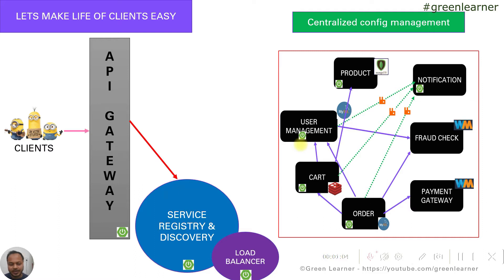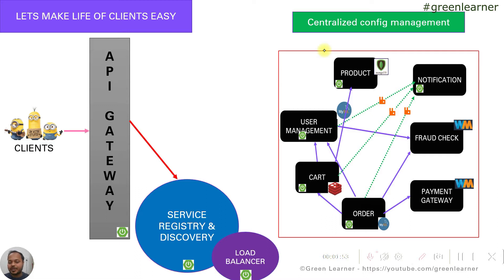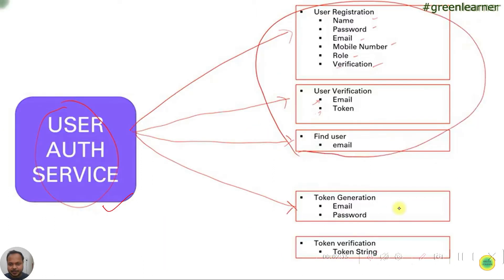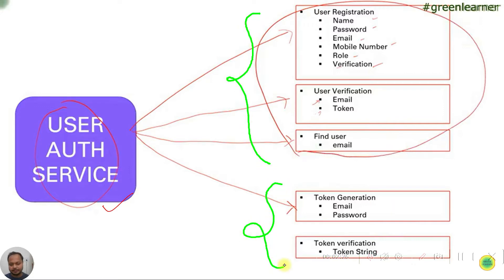This is something we are going to build. All the microservices you are seeing — product, user management, cart, fraud check, notification — are part of this series. The product microservice is already created and all videos are on the channel in this playlist. In the last video we talked about the user auth service — it was going to handle both user management and token generation like login.